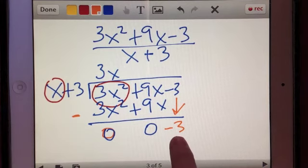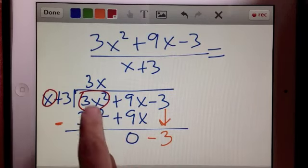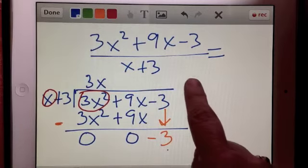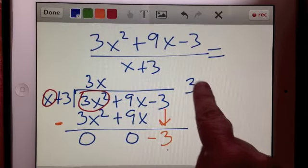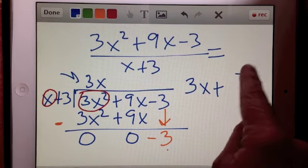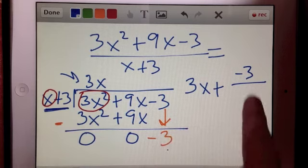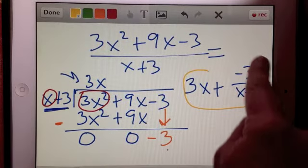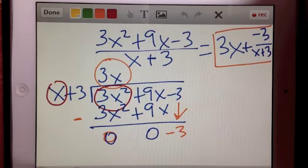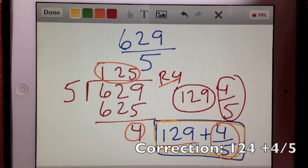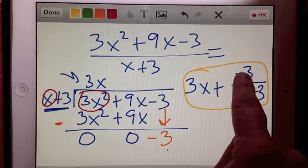And this is my remainder, because there isn't anything I can multiply by x to get me negative 3. So now I'll write the solution to this long division problem as 3x, which is this number right here, plus negative 3 over x plus 3.